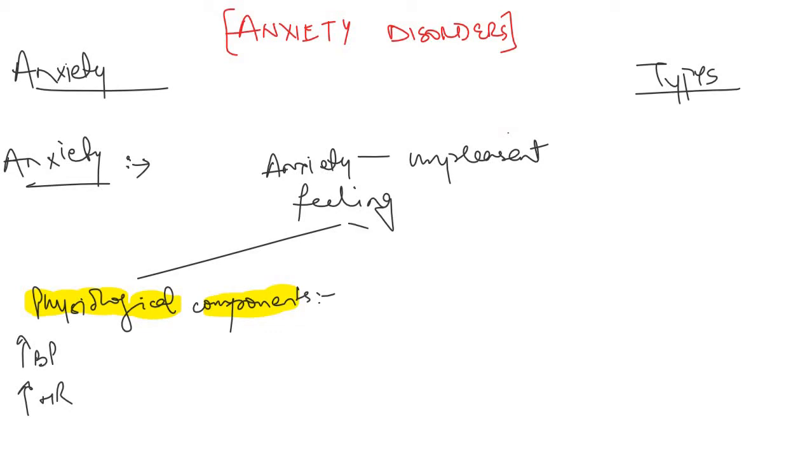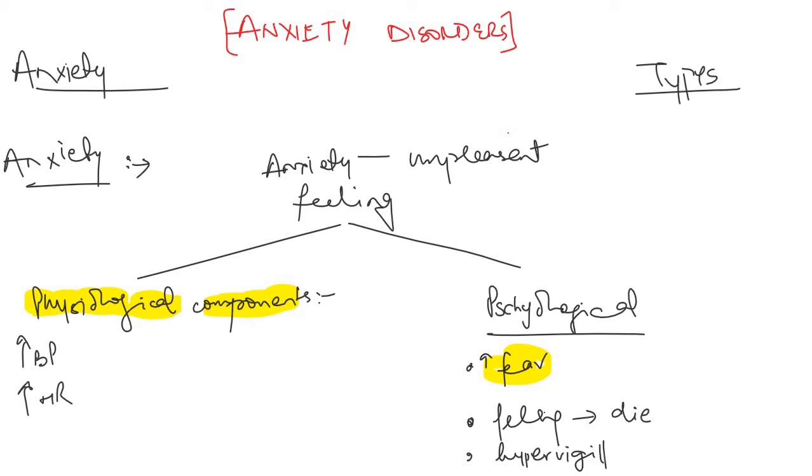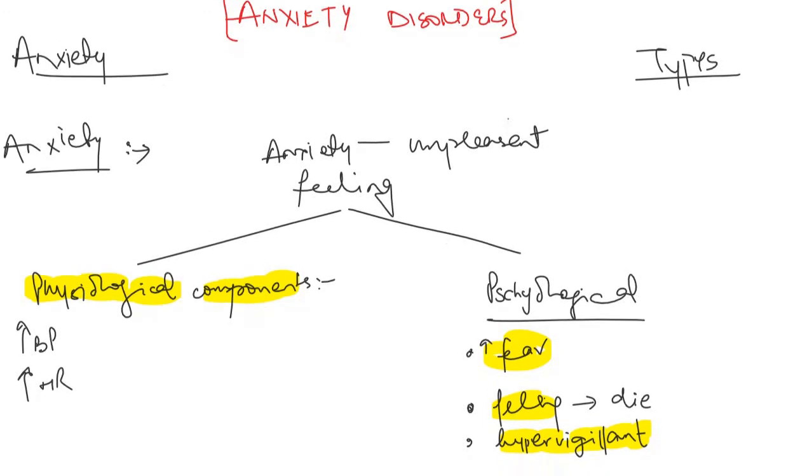If we talk about the psychological component during anxiety, in case of anxiety there is increased fear. All of us have experienced this thing at some moment of our lives. There is a feeling that the person is going to die and there is a feeling of hypervigilance. The patient becomes vigilant or hypervigilant about the surroundings. So these are the basic characteristics of anxiety.